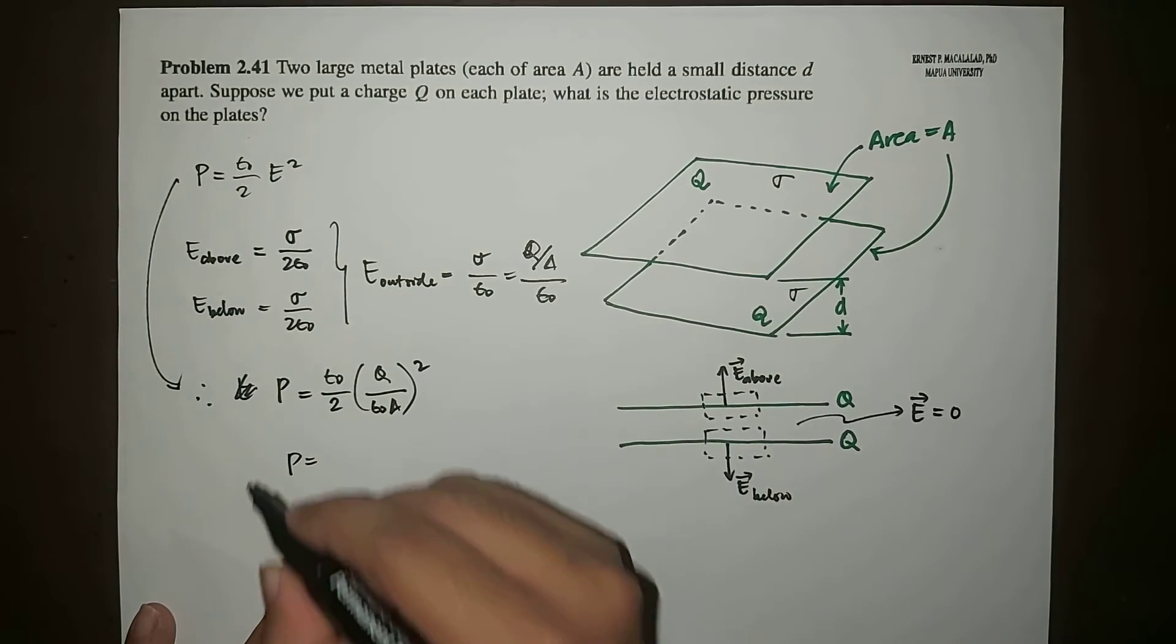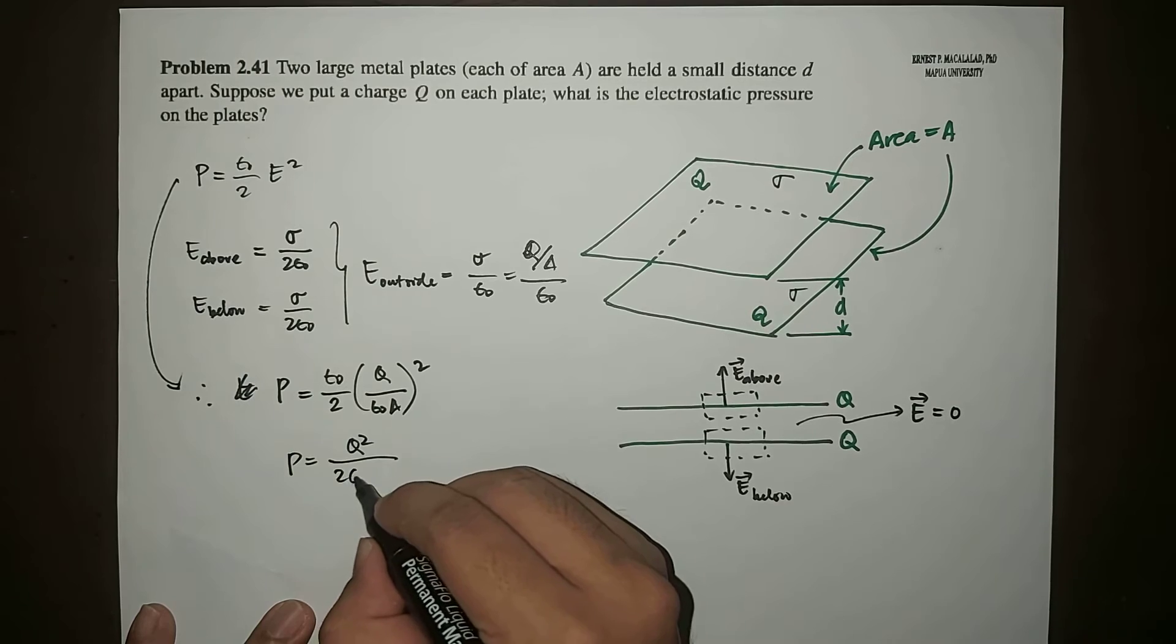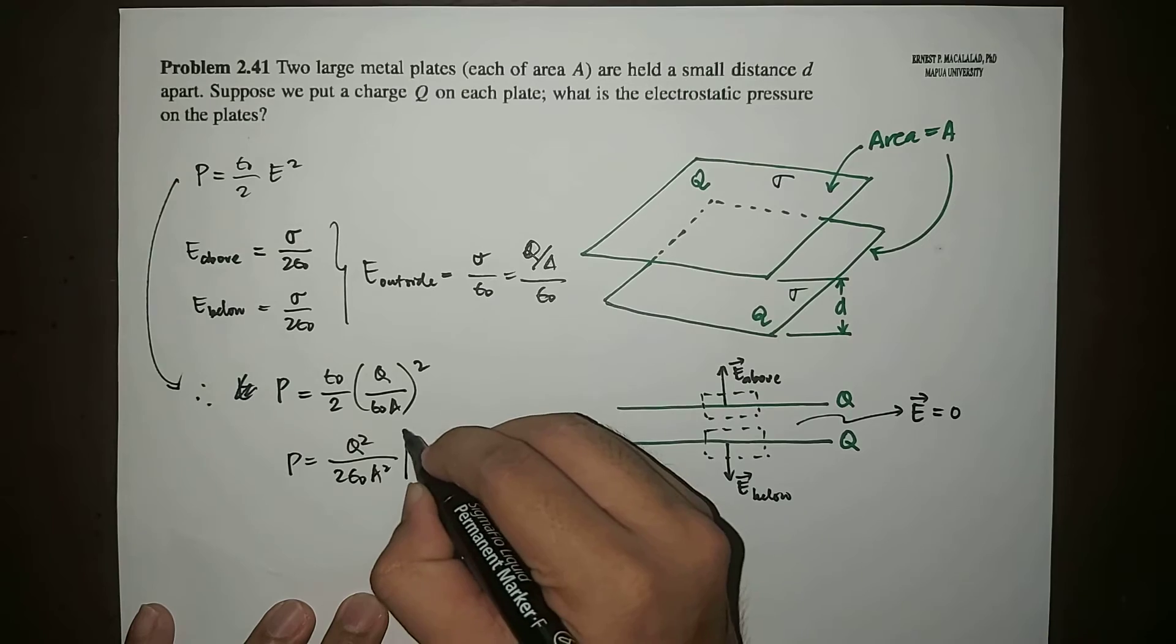Or this is now equal to Q squared over two epsilon naught A squared.